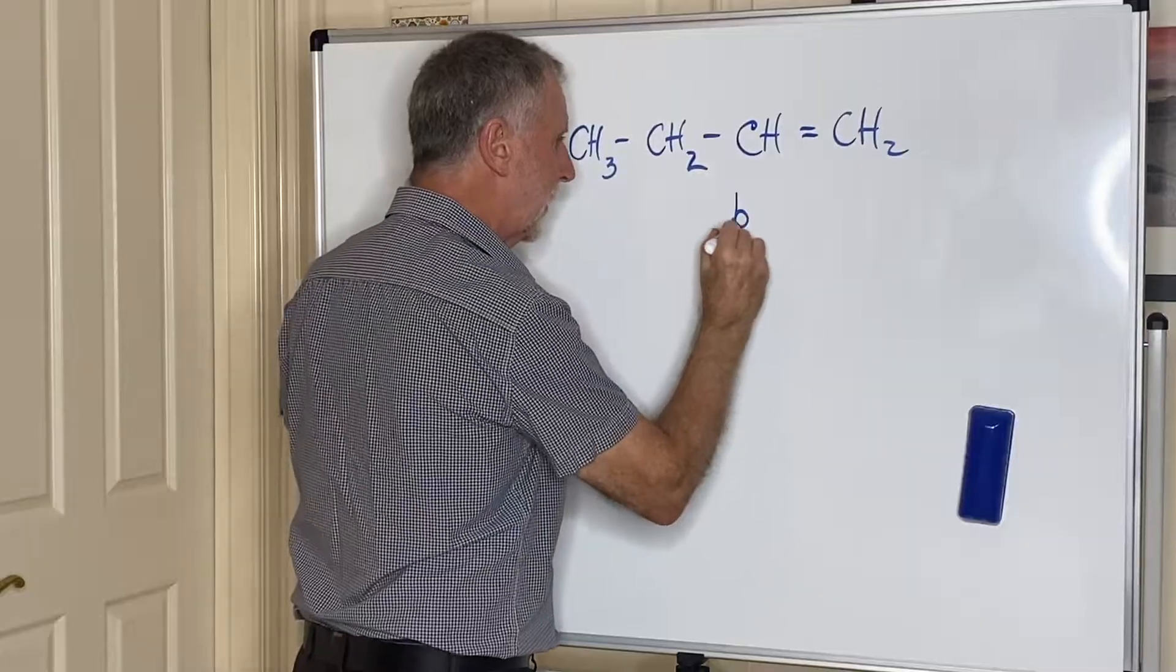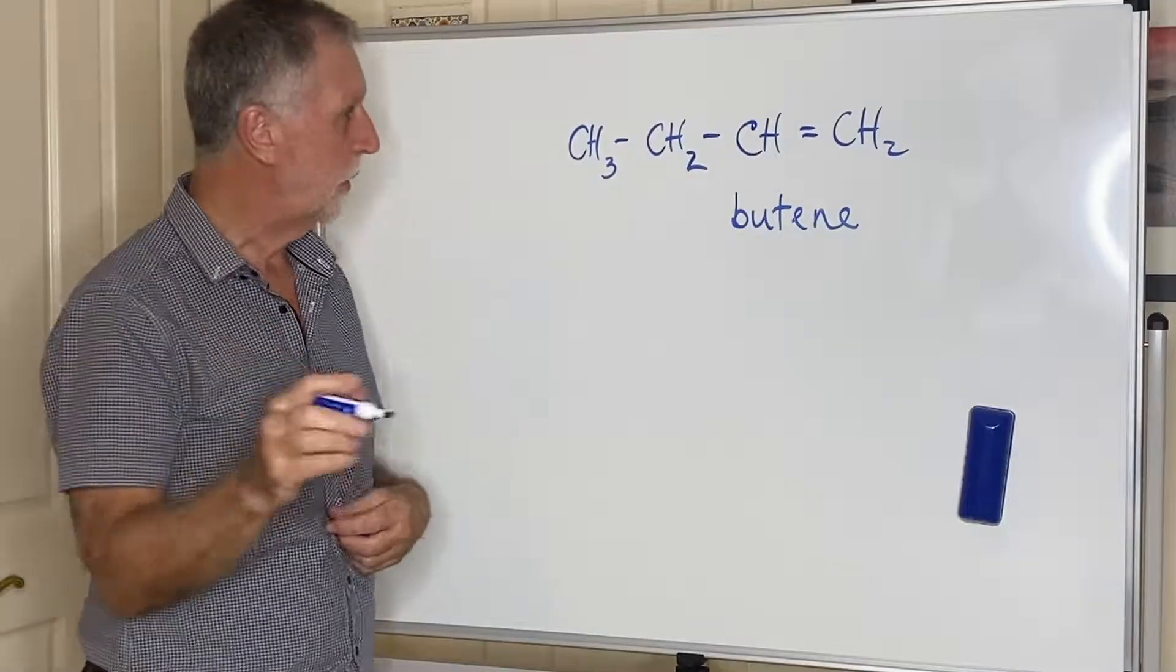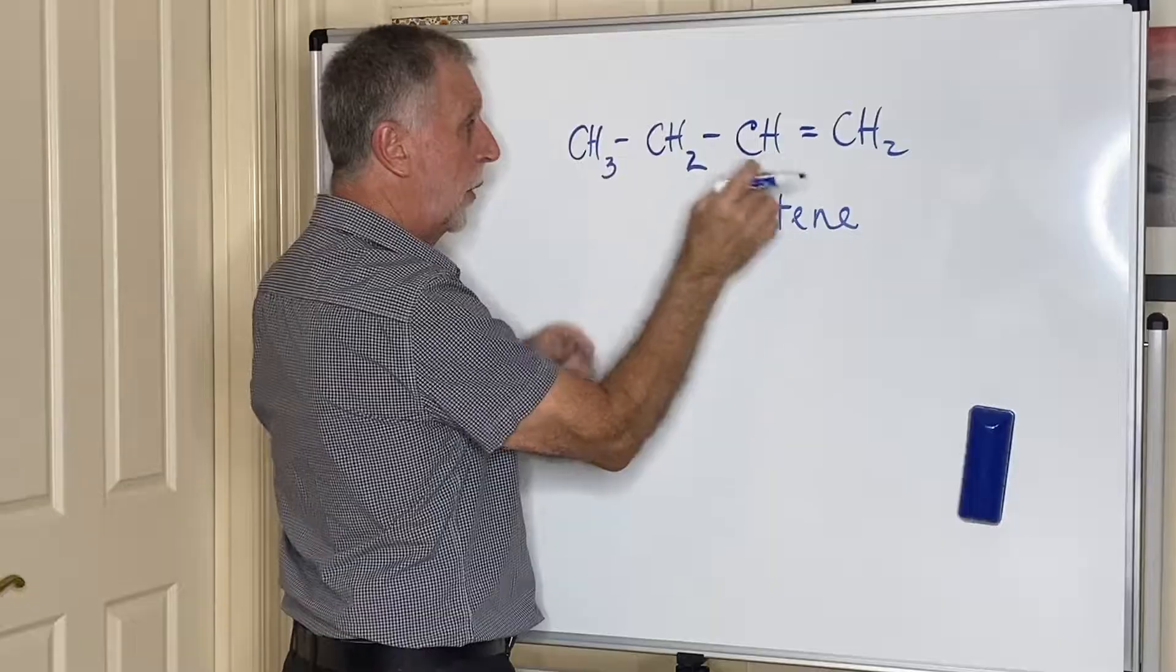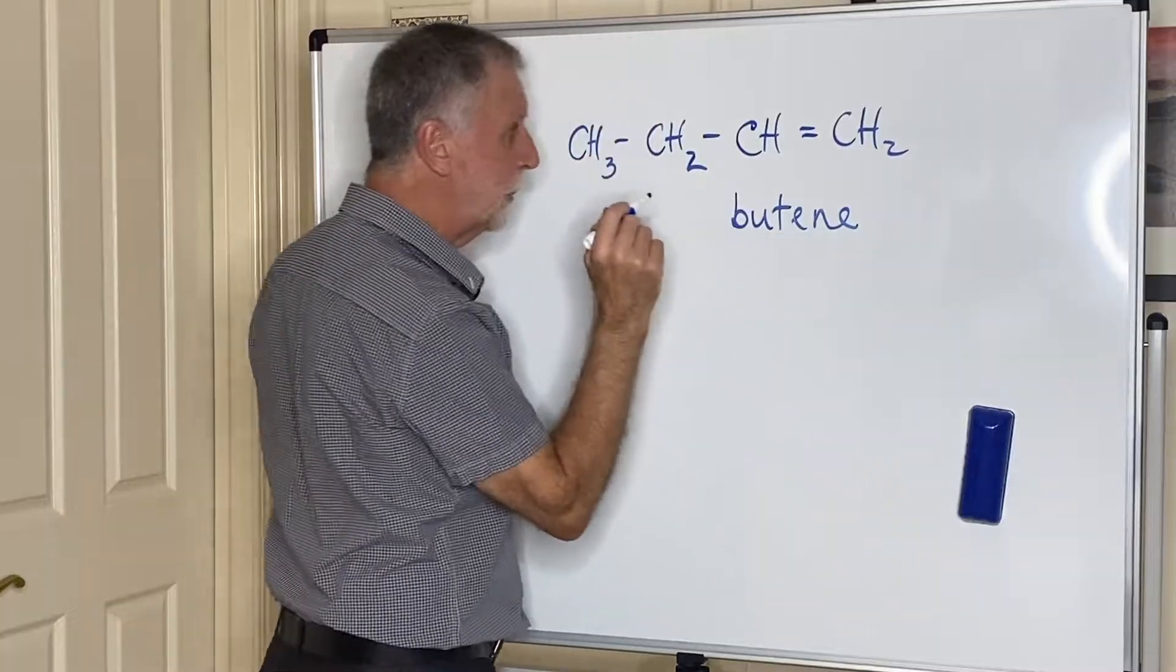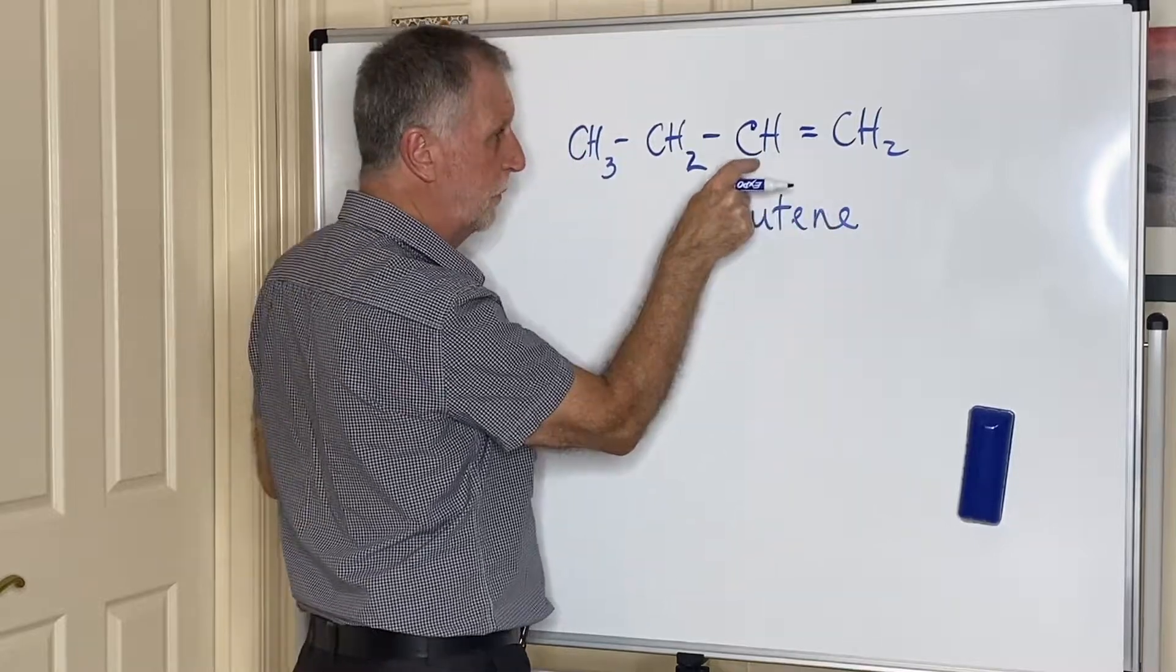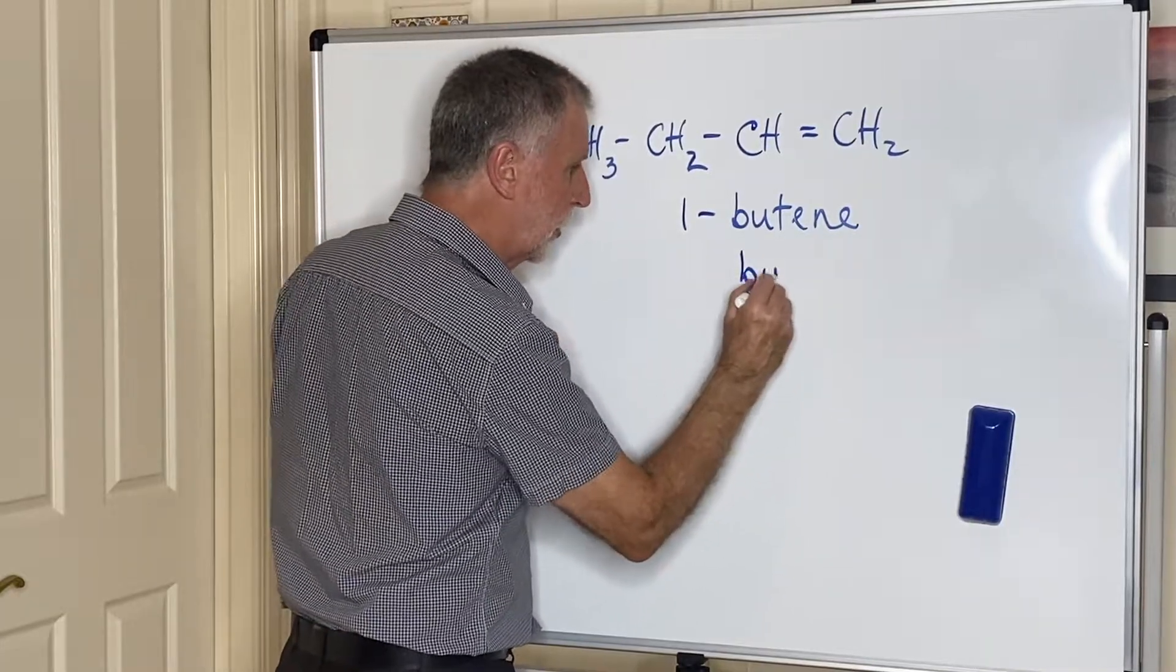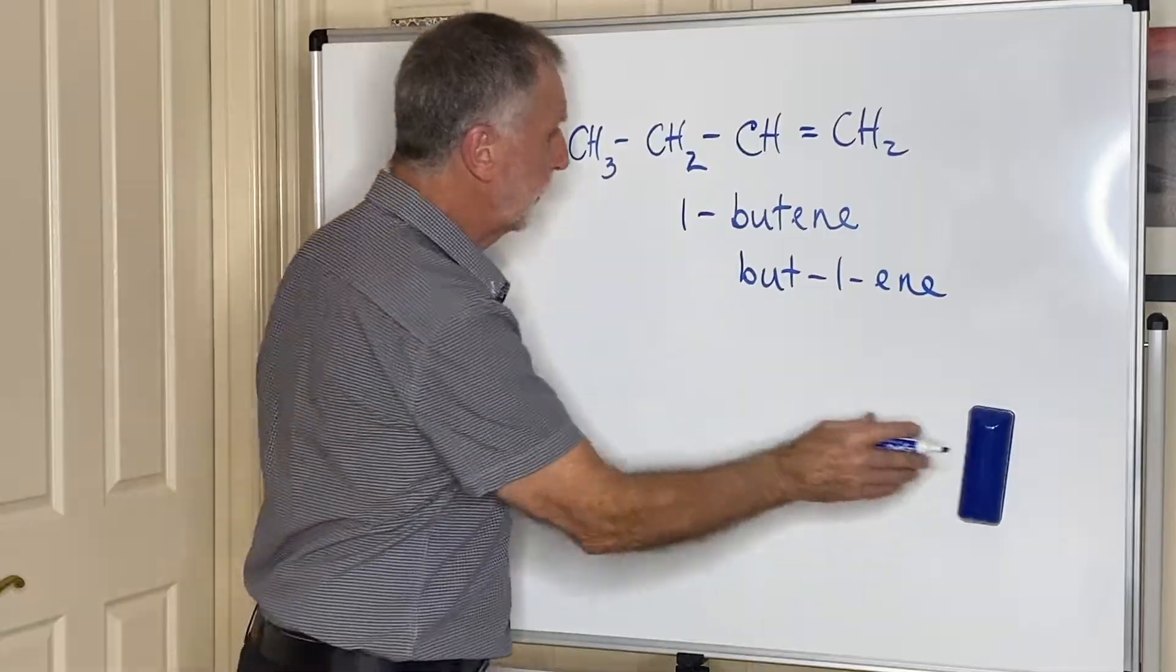But be careful, if you just write this then you're not going to get it right because now the double bond has two options: it could be between the first and second carbon, or between the second and third, and you have to distinguish them. The way to do that is by putting a number in. Since this double bond is attached to carbon one, we put a one there. The other option would be to call it but-1-ene, they're both correct.